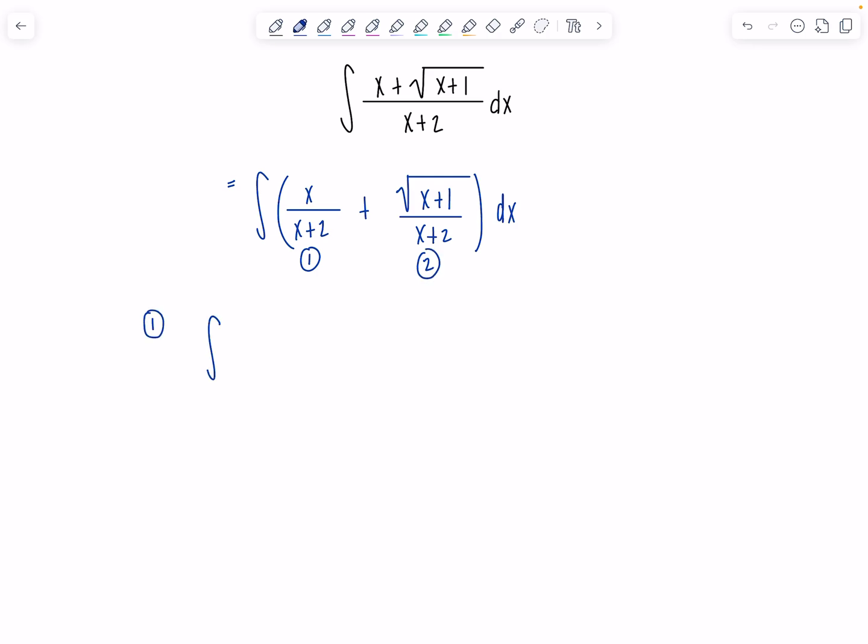So integral 1 is x over x plus 2 dx. Now again, when the degree of the numerator and denominator are equal, then you need to long divide. Actually, anytime the degree of the denominator isn't higher, we long divide before we try to do something else. But I can avoid it in this case because I can just sneakily come in here and do plus 2 minus 2 and then be on my merry little way in just a moment. So we have x plus 2 over x plus 2 minus 2 over x plus 2.